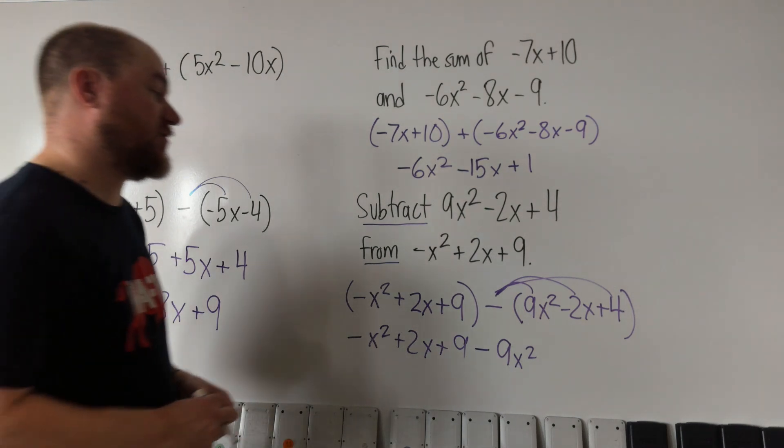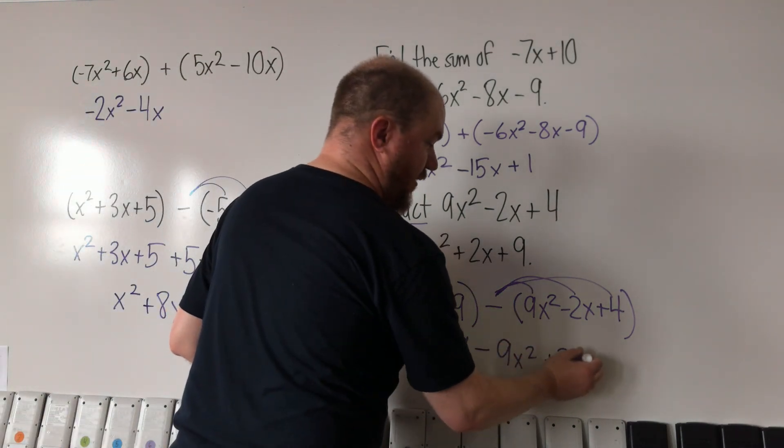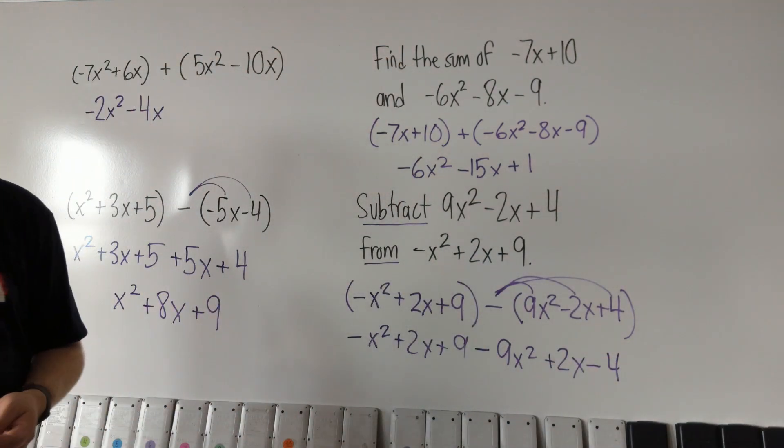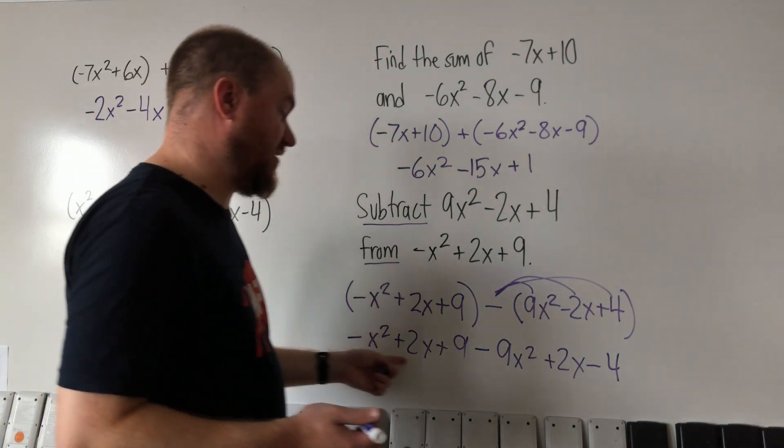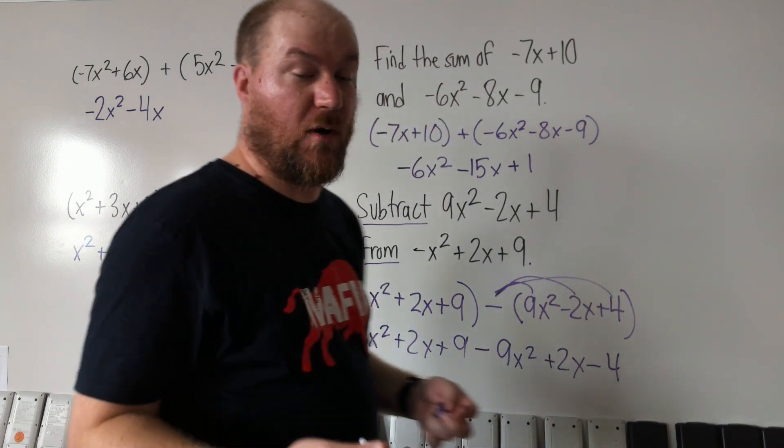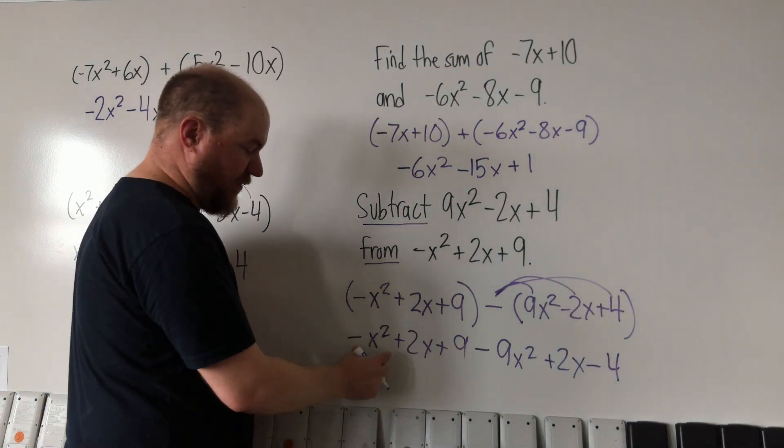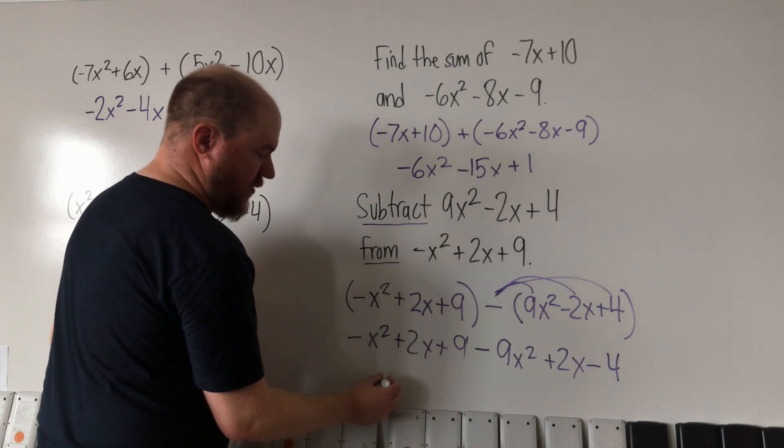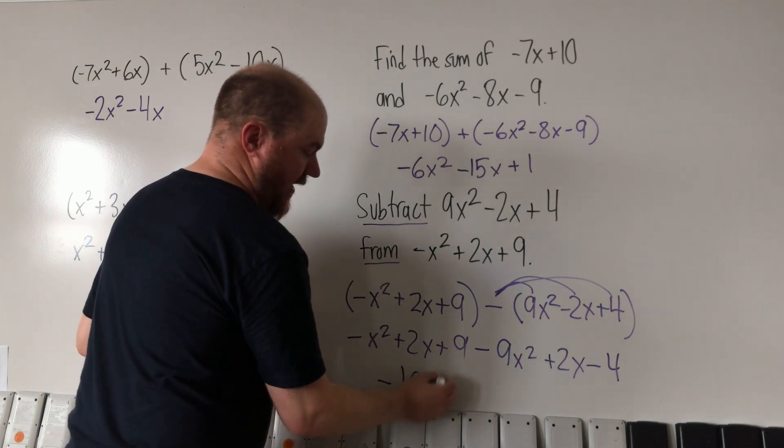So negative 9x squared plus 2x and minus 4. And now we just need to combine like terms here. All these things need to be combined into one statement. Organize it, clean it up a little bit. We have negative x squared and negative 9x squared, that's negative 10x squared.